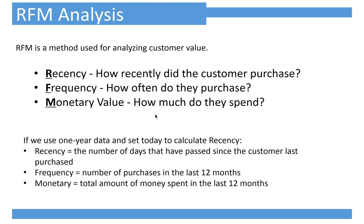Second is frequency. It is the number of purchases in the last 12 months. So in the last 12 months, if a customer purchased 100 times, it should be more valuable than a customer who purchased only one time.